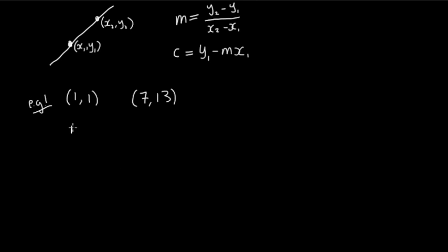Let's calculate m. So m is the difference in the y coordinates, so that'll be 13 minus 1. And that's divided by the difference in the x coordinates, so that'll be 7 minus 1. 13 minus 1 is 12, 7 minus 1 is 6, 12 divided by 6 is 2. So this gives me m.